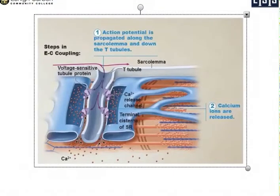This is showing a close-up of the last picture. We have the T-tubule, the sarcoplasmic reticulum, and the two terminal cisternae on either side of the T-tubule. You can see the calcium inside the terminal cisternae.